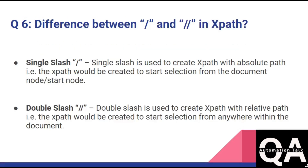The sixth question is: what is the difference between single slash and double slash in XPath? A single slash is used to create an XPath with an absolute path, meaning selection starts from the document or root node. A double slash is used to create an XPath with a relative path, meaning selection can start from anywhere within the document. Double slash is always recommended over single slash.